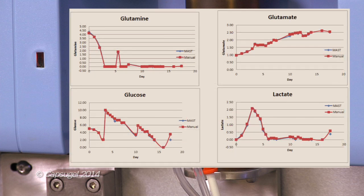Metabolite data such as glutamine, glutamate, glucose and lactate are very consistent between MAST and manual samples.